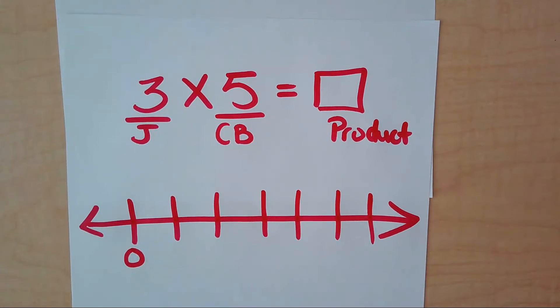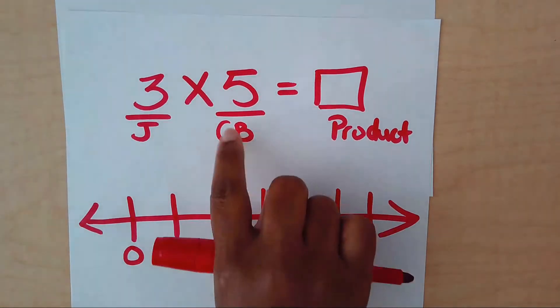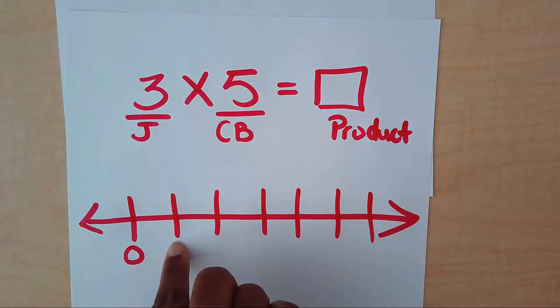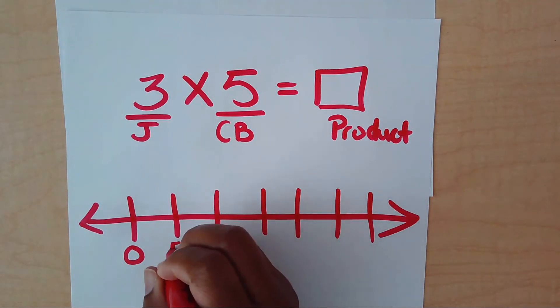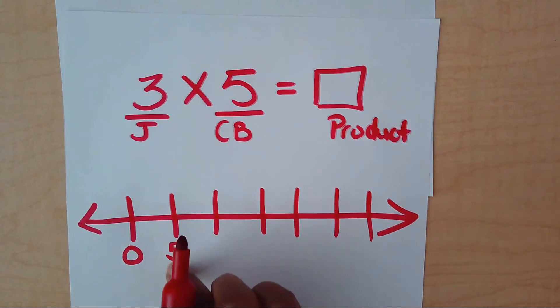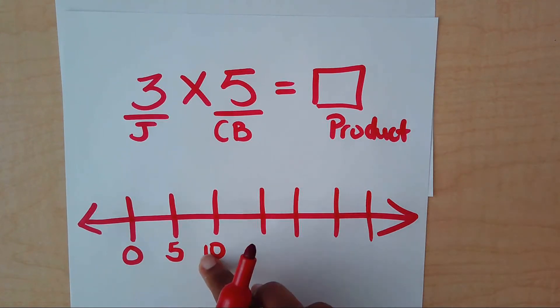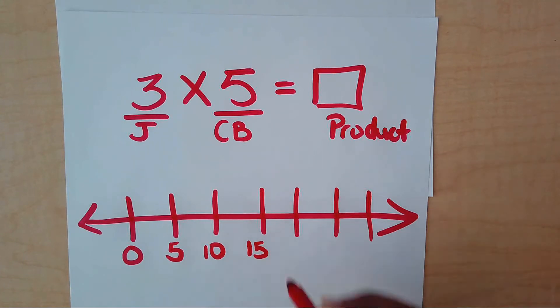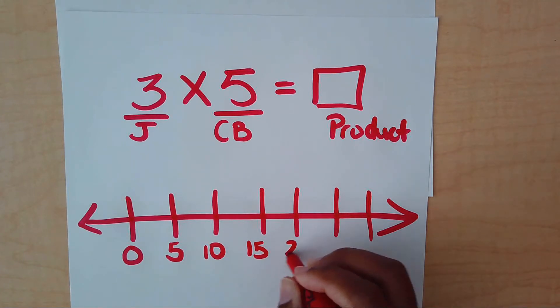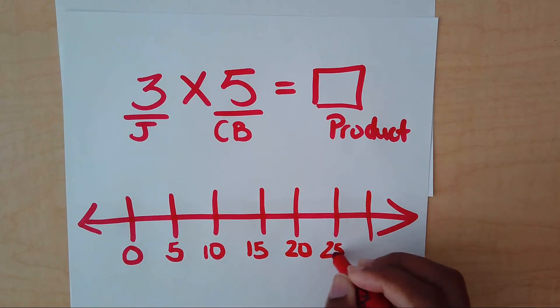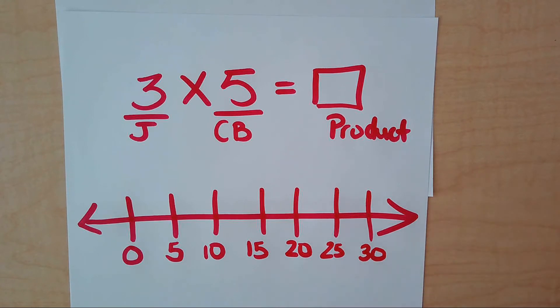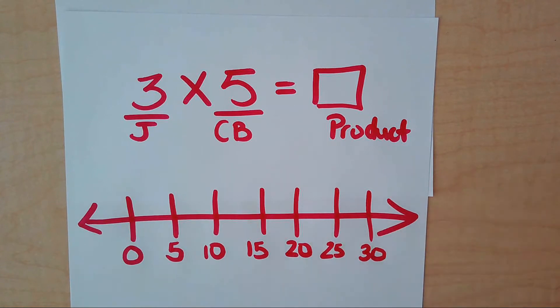So I'm going to draw that amount because I just need three jumps. Now, if you remember, every number line must start with a zero. So you have to put your zero down right away. Since we are counting by fives, then that's going to be our first number. 5 plus 5 is 10. 10 plus 5 is 15. 15 plus 5 is 20. 20 plus 5 is 25. And 25 plus 5 is 30.